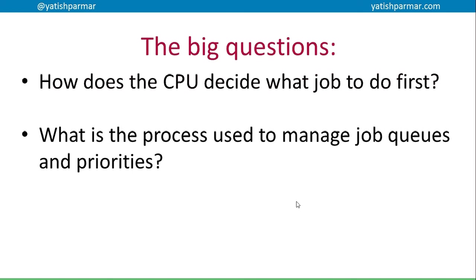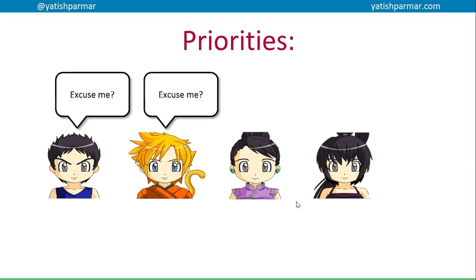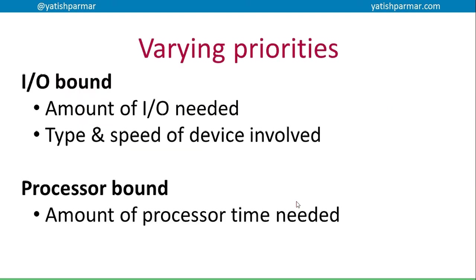A quick recap of priorities - remember we talked about in the previous video on interrupts: when you have different jobs coming in and requesting interrupts at the same time, or perhaps something more important asking, things need to be queued up in order of priority. In terms of scheduling, when you have jobs for the CPU, just bear in mind there's a difference between programs and processes.